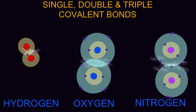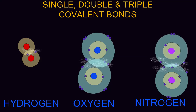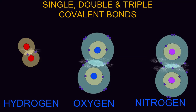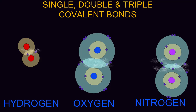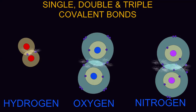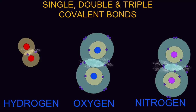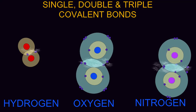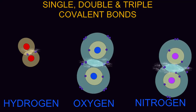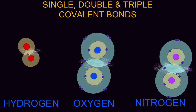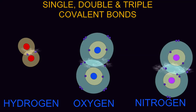When oxygen atoms react with each other, they do not share one electron each, because this would not give them a sufficient number to fill their outermost shell. Each oxygen atom donates two electrons to the shared bonds to form double covalent bonds.